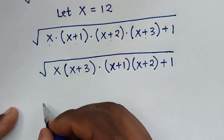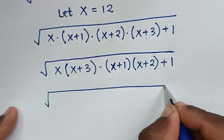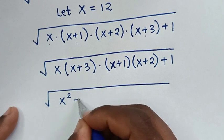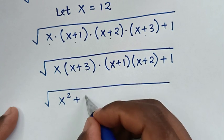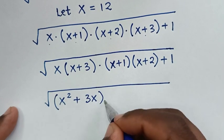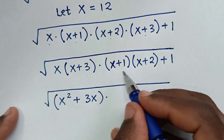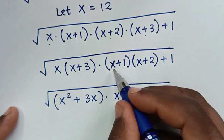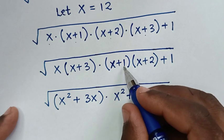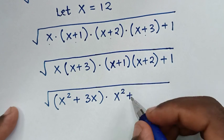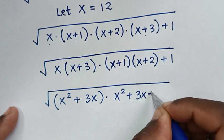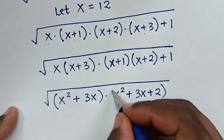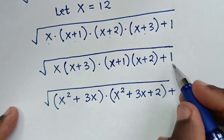In the next step, expanding: x times (x plus 3) gives x² plus 3x, and (x plus 1) times (x plus 2) gives x² plus 3x plus 2, then plus 1.